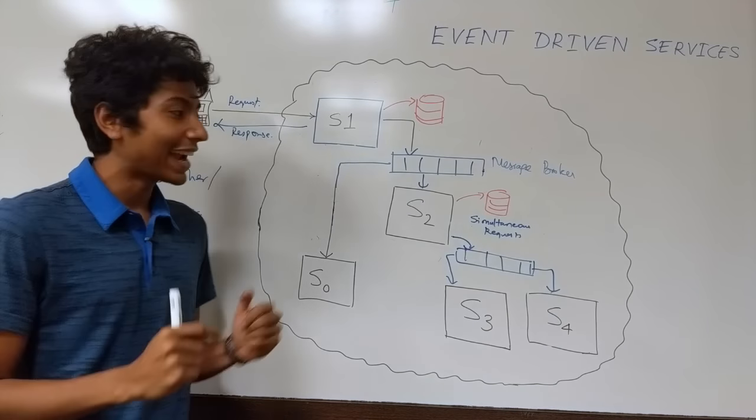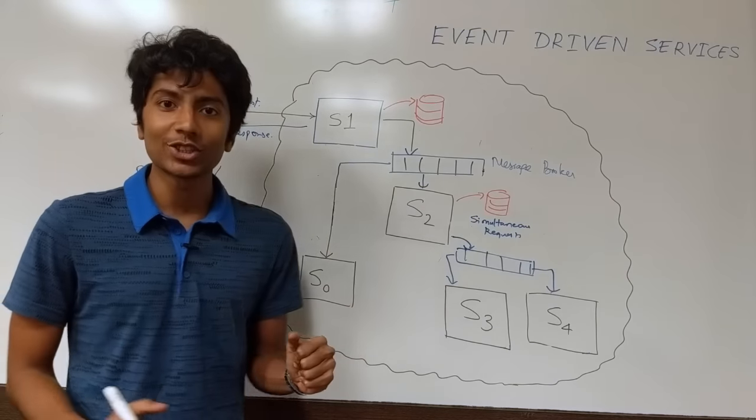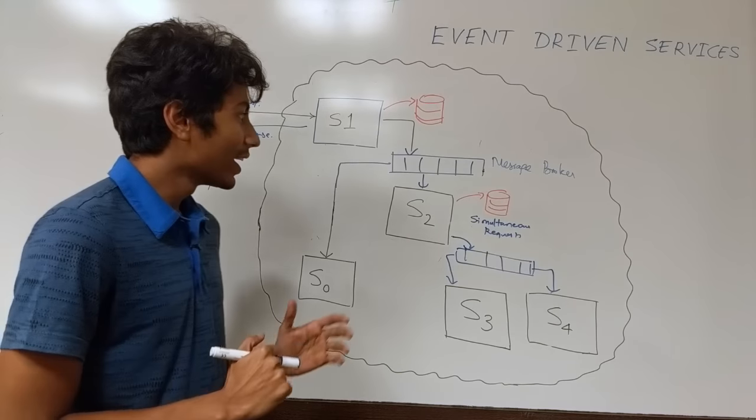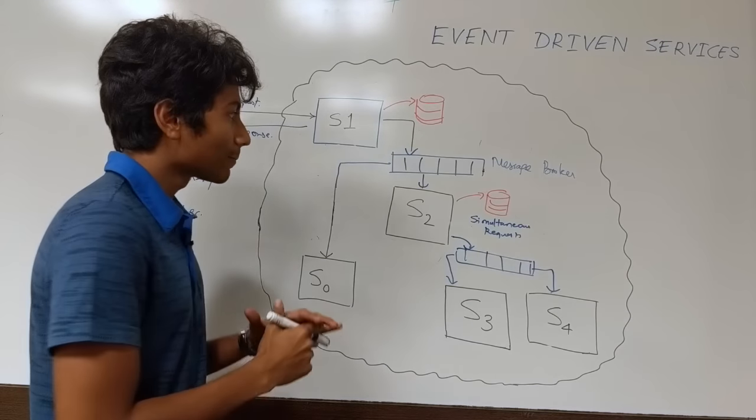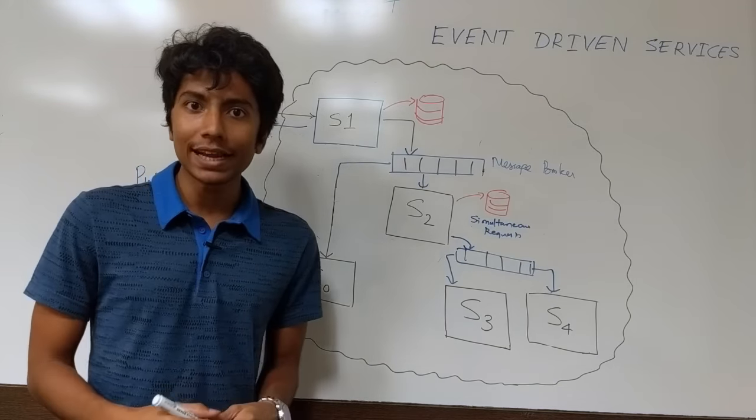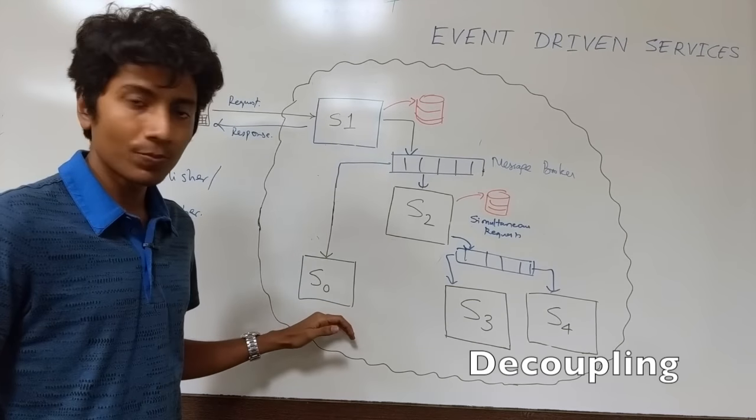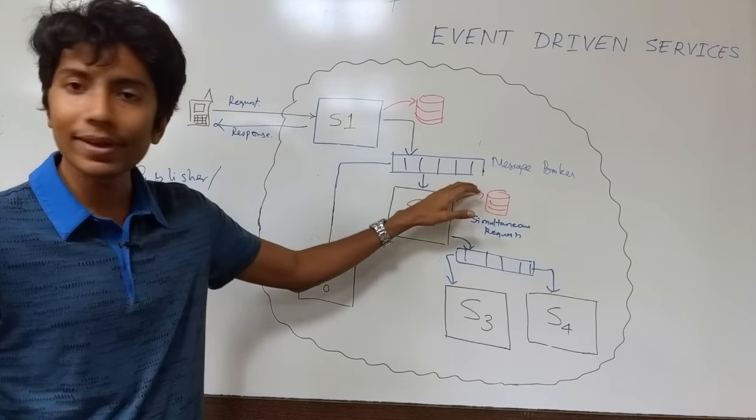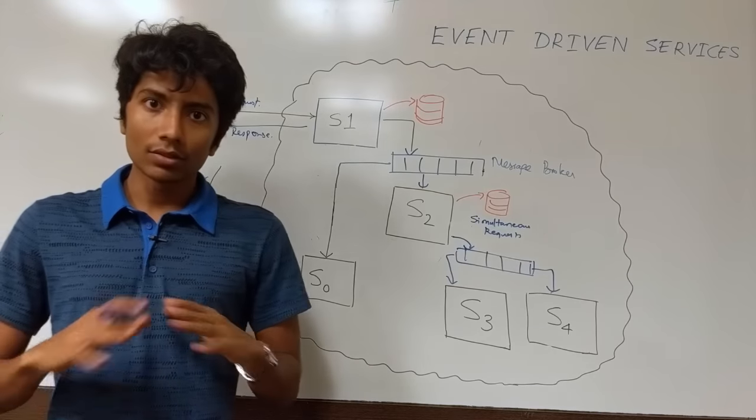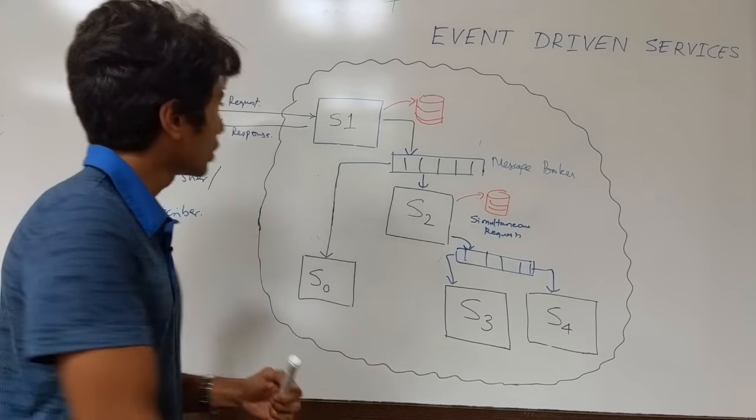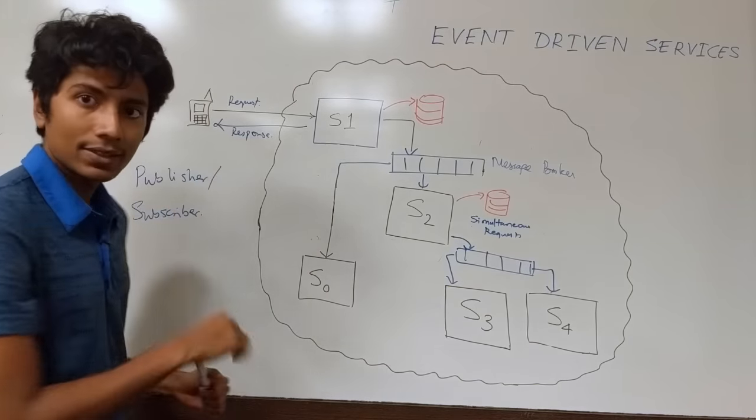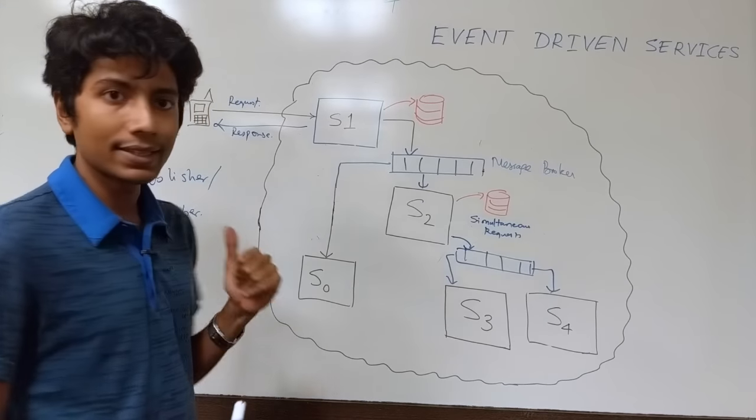There are some advantages and disadvantages with this architecture. Let's start with the advantages. The first one is that this is going to decouple a lot of the responsibilities that you had. So S1 is no longer dependent on S2 and S0. Instead it just publishes to the message broker and then it's relieved. So its responsibilities are over. It sends a message to the client saying that I'm successful. Client says okay.